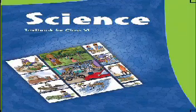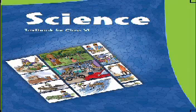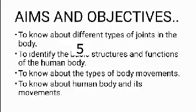Good morning students. Today we are going to learn a new lesson of class 6 science, that is chapter number 6: Body Movements. The aims and objectives of this lesson are to know about different types of joints in the body, to identify the basic structures and functions of the human body, to know about the types of body movements, and to know about human body and its movements.